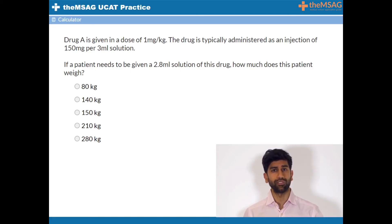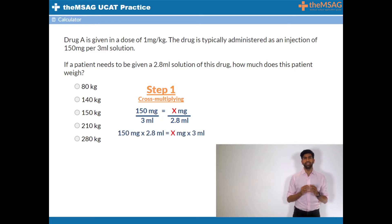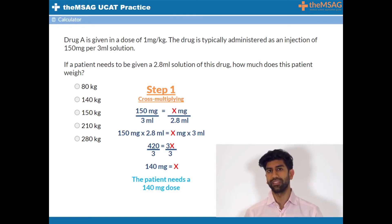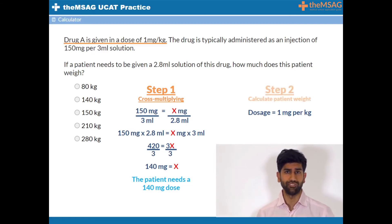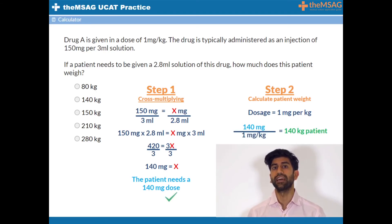Remember what we said about cross-multiplying when the calculation isn't immediately obvious. 150 milligrams over 3 mils equals x milligrams over 2.8 mils. 150 milligrams times 2.8 mils equals x milligrams times 3 mils. 420 equals 3x. x equals 420 over 3, which equals 140 milligrams. Therefore we now know that our patient needs 140 milligrams of the drug. We also know that this drug is administered as 1 milligram per kilogram, so finding his weight is straightforward: 140 milligrams over 1 milligram per kilogram equals 140 kilograms. The correct answer is therefore B.